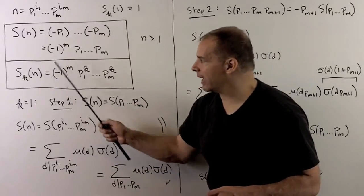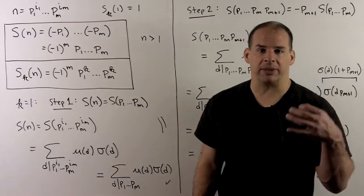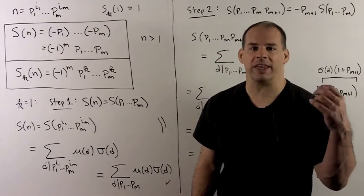For S of k of n, same idea, except now we strip out the exponents, replace each of them with k.